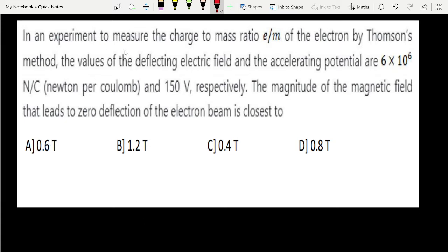In an experiment, these are all questions of B that we are solving. Parts here we will do later on. In an experiment to measure the charge to mass ratio e/m from Thomson's method, we found out what was first of the electron by Thomson's method.